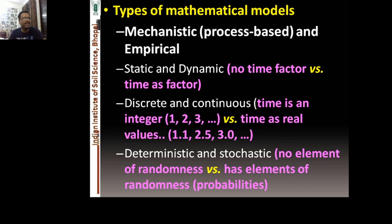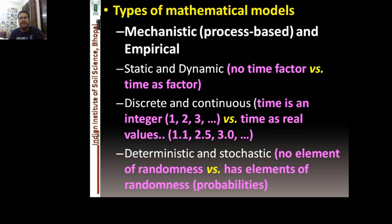Types of mathematical models include mechanistic or process-based models and empirical models — crop growth simulation models are mechanistic. There are also static and dynamic models. A static model contains all calculations necessary to present the relationship between, for example, respiration and growth, derived from knowledge of underlying biochemical processes. For instance, a static model calculates light distribution within a canopy based on canopy architecture, leaf properties, and solar position. Static models often serve as components of dynamic models. In dynamic models, time is a factor and they describe how the system changes over time.